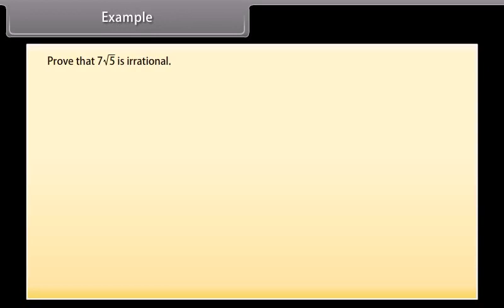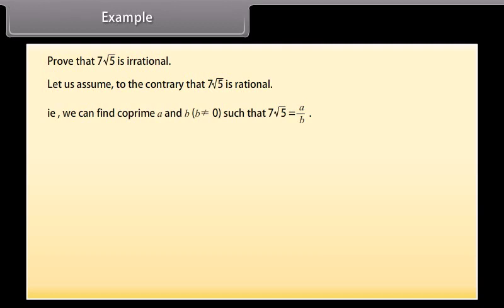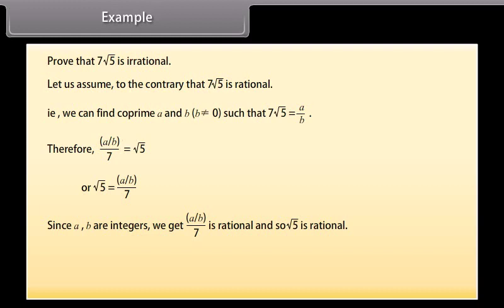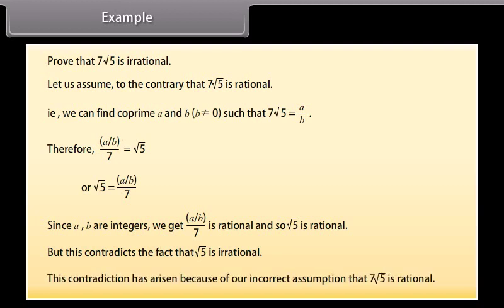Example: Prove that 7√5 is irrational. Assume to the contrary that 7√5 is rational — that is, we can find co-prime a and b, where b ≠ 0, such that 7√5 = a/b. Therefore a/(7b) = √5, meaning √5 is rational. But this contradicts the fact that √5 is irrational. This contradiction arose from our incorrect assumption that 7√5 is rational.